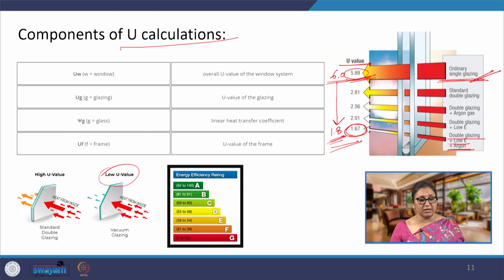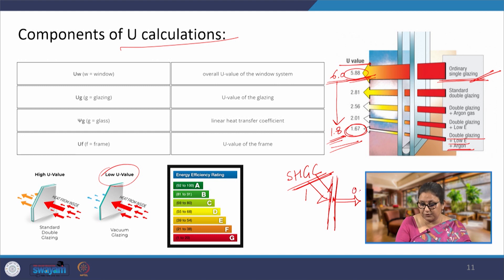The other property is SHGC, solar heat gain coefficient. If 100 percent of solar radiation is incident on glass, what percentage is directly transmitted inside is the solar heat gain coefficient. If only 50 percent is transmitted, SHGC is 0.5. This is important because glass is transparent, and unlike opaque walls or roofs, there will be direct radiation passing through. SHGC becomes very important.